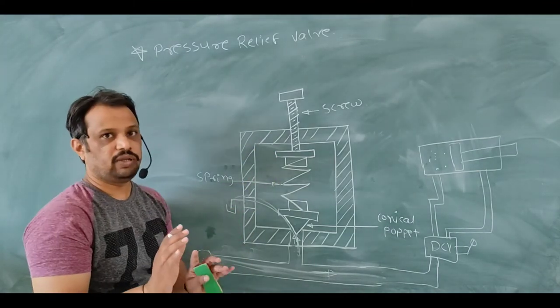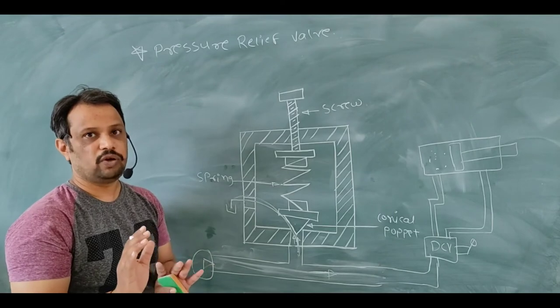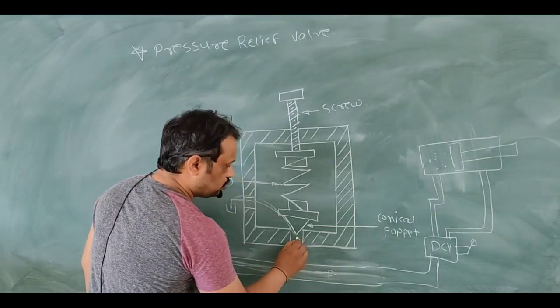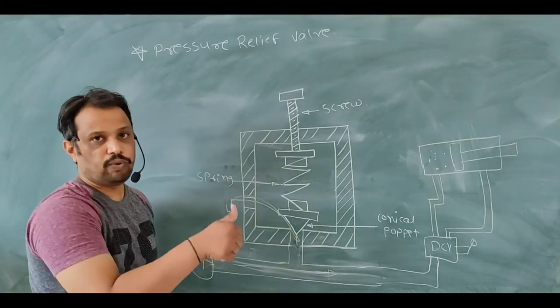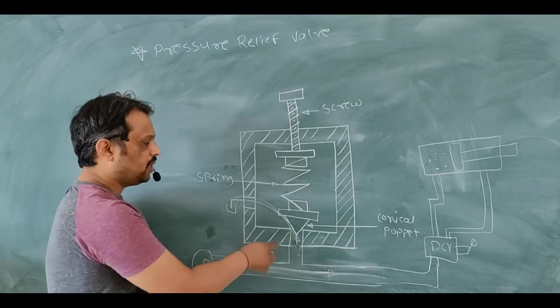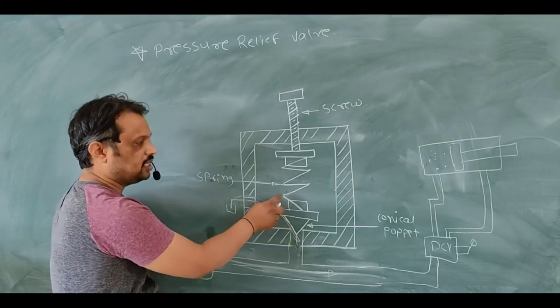When your pressure is normal in your system, oil flows to the system. At the same time, it flows to your PRV also and acting a pressure on your conical poppet. But if this pressure does not exceed the spring pressure, it cannot lift your conical poppet and it goes to your system.